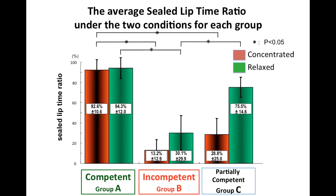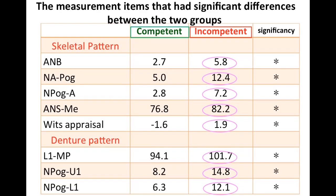As a result, we were able to divide the subjects into a group of lip competent subjects, for whom it was thought that their lips were closed for almost 24 hours a day, and a group of lip incompetent subjects, for whom it was thought that their lips were apart for almost 24 hours a day. The occlusal state was almost normal occlusion. After dividing the subjects into these two groups, several cephalograms of subjects in the two groups were used to compare tooth positions.